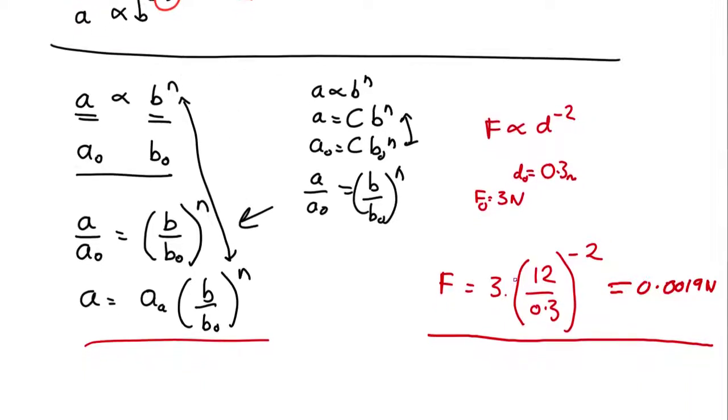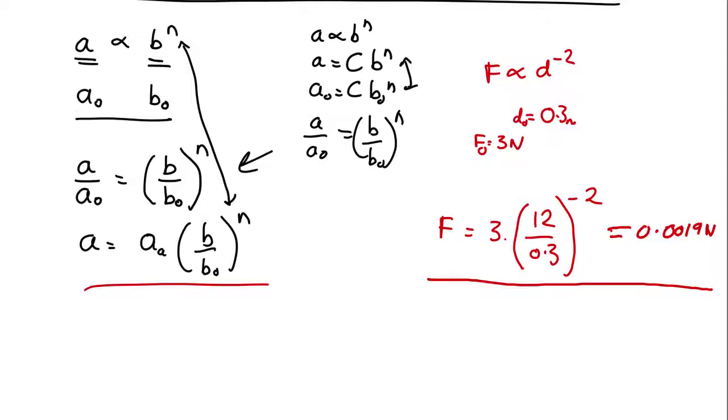So, for another example, it turns out that for stars, the luminosity, which is how bright they are, is proportional to the mass to the fourth power. So, what's the luminosity of a star that's twice the mass of the Sun? So, we know for the Sun, the luminosity of the Sun equals the mass of the Sun to the fourth power.